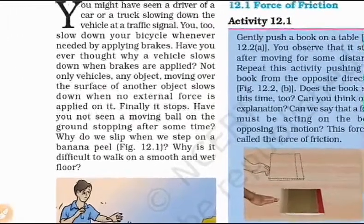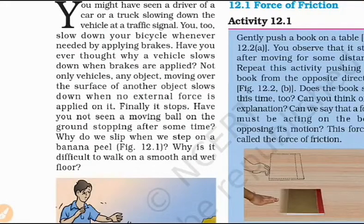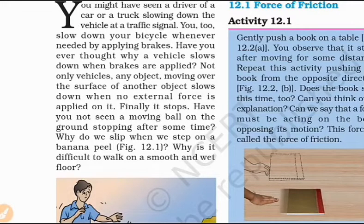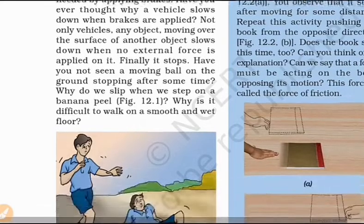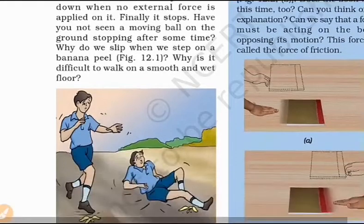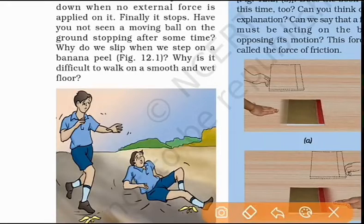For example, if we ride a bike on the road and apply the brake, friction acts between the wheel and the road. When we brake, friction is applied between the brake and the wheel. These are the two principles of friction.